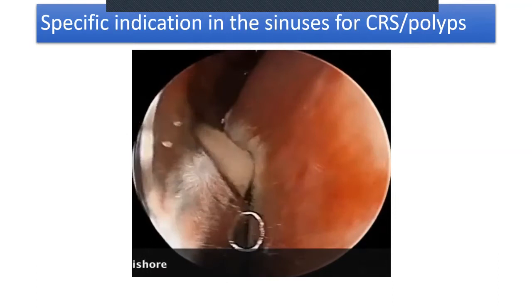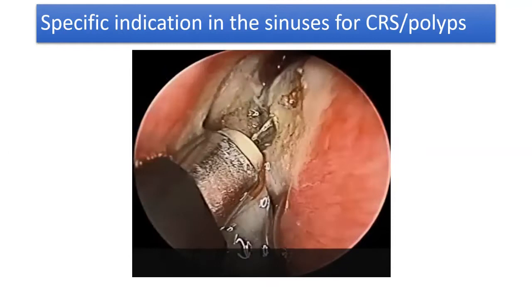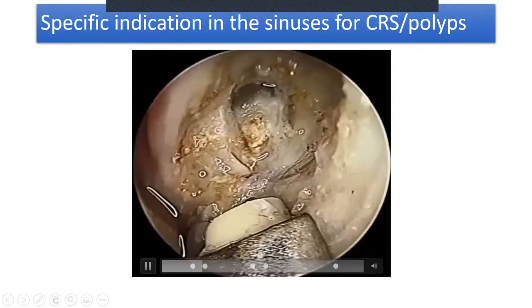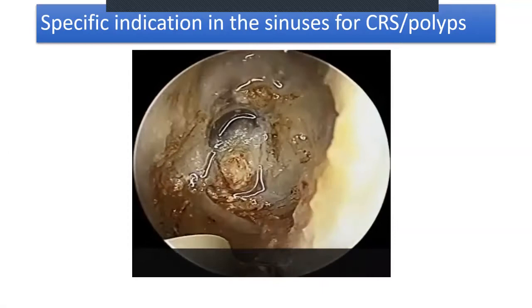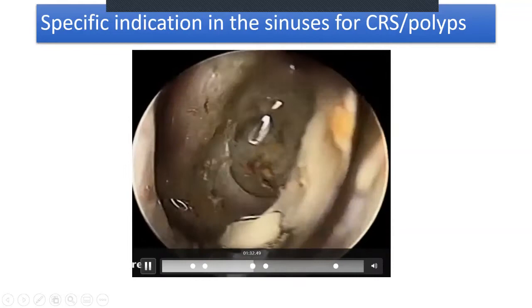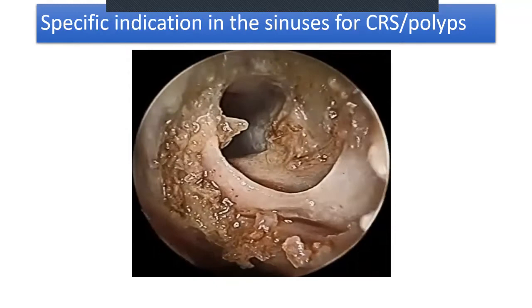This tool can irrigate, coagulate, and ablate — you can see the sphenoid ostium beautifully and ablate the polyp fiber by fiber. Then using mushroom forceps to clear it off, you can see exactly where it was coming from — not a drop of blood.